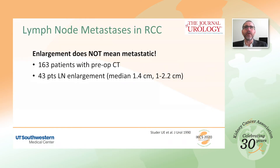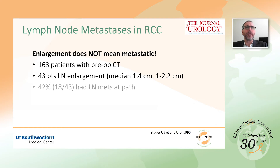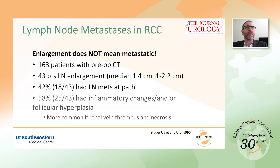Missing micrometastasis is not the only challenge with cross-sectional imaging. In a study of 163 patients evaluated with CT prior to surgery, 43 patients had lymph node enlargement, and of those, only 42% had metastasis on pathology. In the other 58%, the enlargement was secondary to reactive hyperplasia, and this happened more often in patients with renal vein tumoral thrombus and in those with necrosis in the primary tumor.